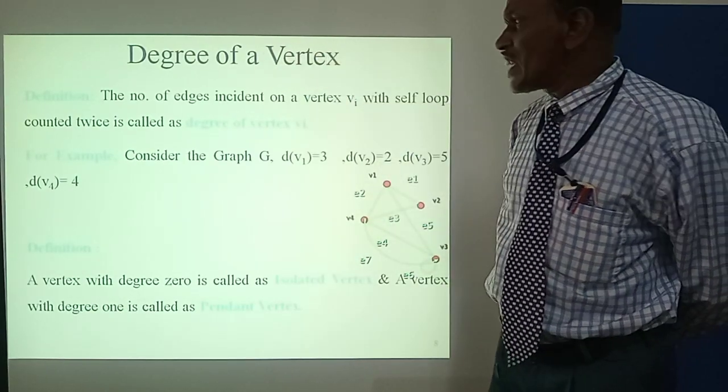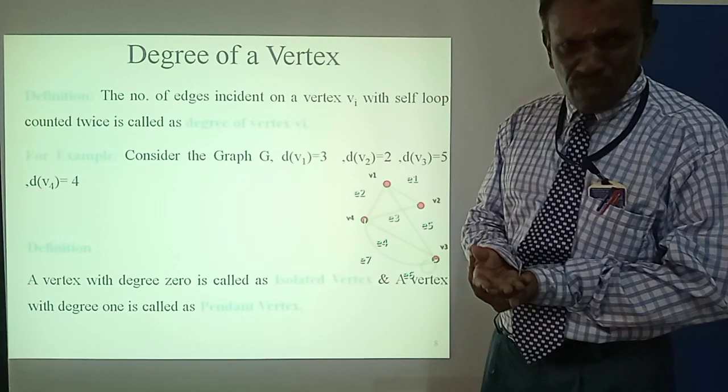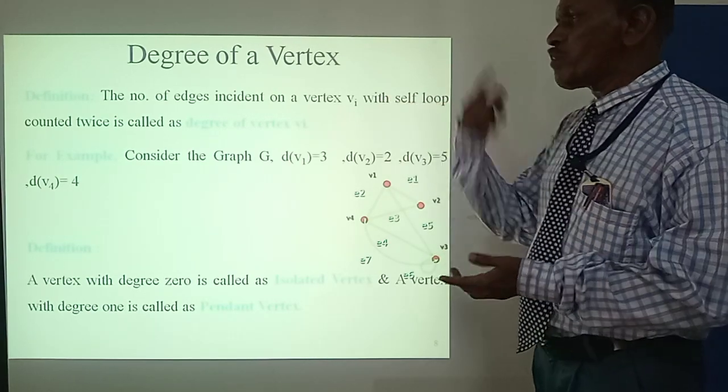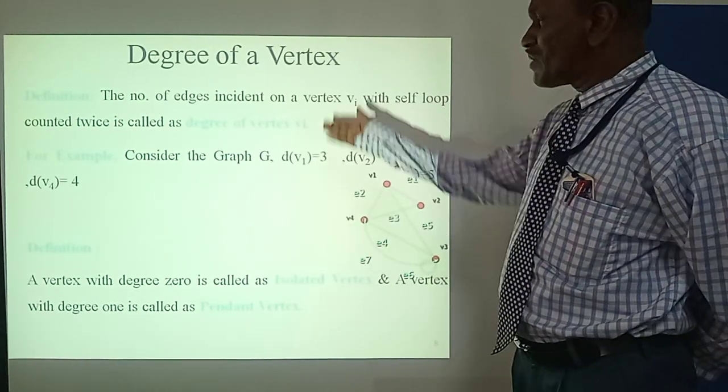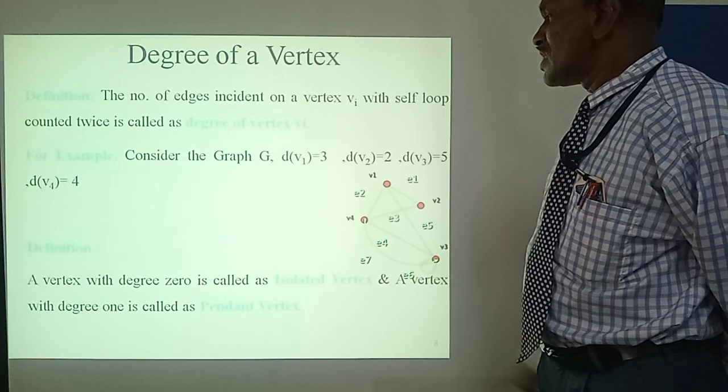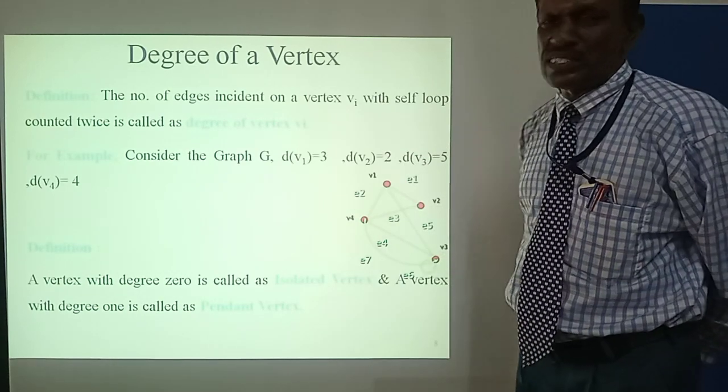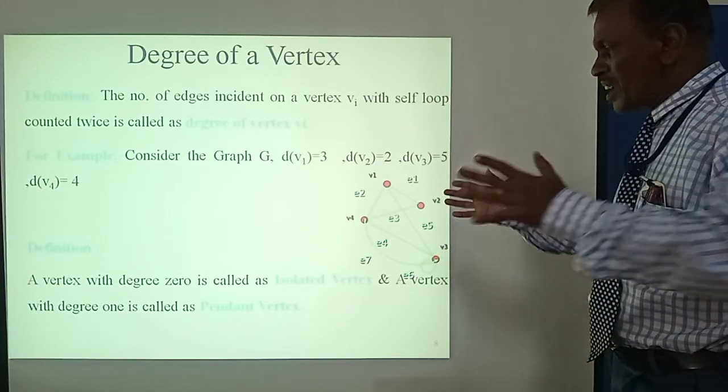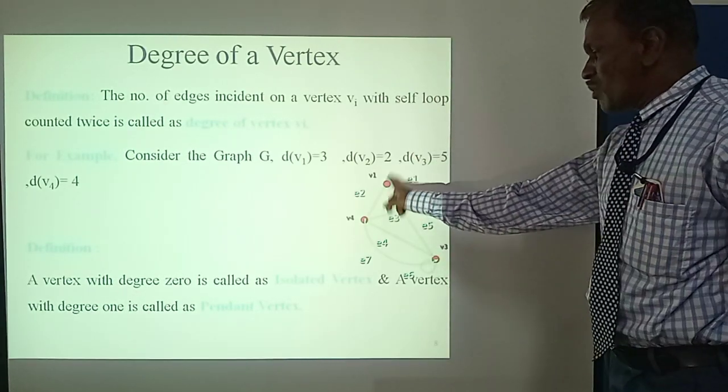Degree of a Vertex. The degree of vertex is the number of edges incident on a vertex Vi, with self-loops counted twice. This is called the degree of vertex Vi. For example, consider the graph G: d(v1) = 4, d(v2) = 2, d(v3) = 5. The degree counts how many edges connect to each vertex.